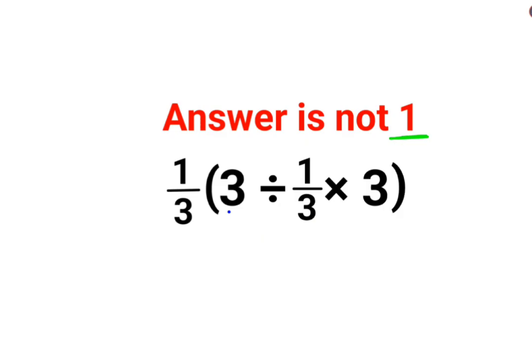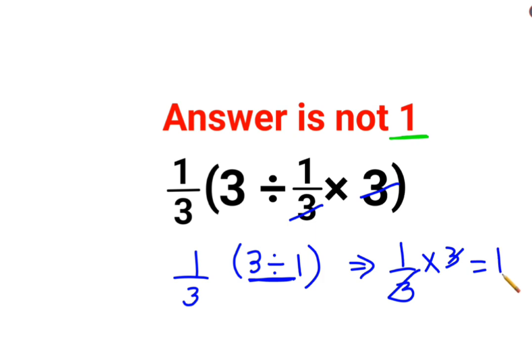A lot of people think that this is so easy - cancel this so we get 3 divided by 1. Everything is just getting multiplied by 1/3, so this basically becomes 1/3. This bracket is 3 divided by 1 which is again 3, so this is cancelling, so answer is 1. That is incorrect.